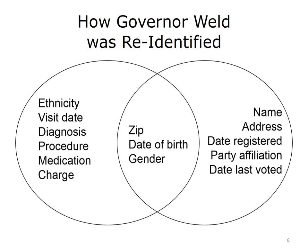The figure on this slide shows how the medical information about Governor Weld was re-identified. To the left is the de-identified medical database, which has various medical data including diagnoses, procedures, medications, etc. It also has the de-identified person's zip code, date of birth, and gender. This latter information is also in the voter registration database on the right, which also has the individual's name and address, not to mention some voting-related information.